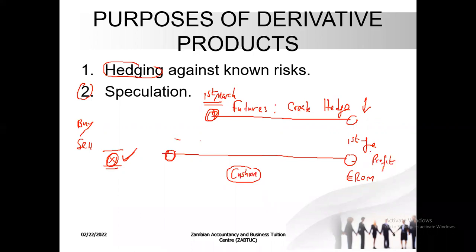So his outcome won't be as terrible. Remember that you need not have an exposure for you to deal in derivatives — you can just be a speculator. But you people are being trained to be treasurers of companies, so you are going to the futures market because you have a transaction coming on 1st of June and you want to reduce the risk. Then you create the hedge there, hoping that once you combine the results, the impact will be reduced. Sometimes you can even make a net profit.